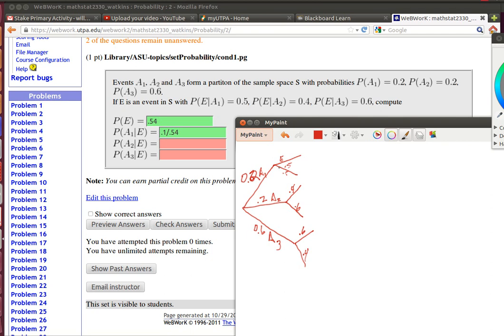Now we could figure out all the end probabilities here. 0.2 and then 0.5 would be 0.10. 0.2 and then 0.5 would be another 0.10. 0.2 and then 0.8 would be 0.08. 0.2 and then 0.6 would be 0.12. 0.6 and then 0.6 would be 0.36. 0.6 and then 0.4 would be 0.24. And of course you can add those up and it's going to be 1.